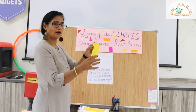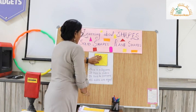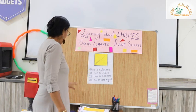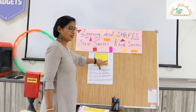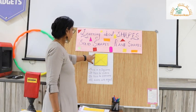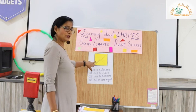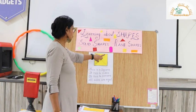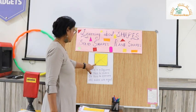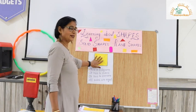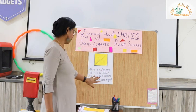Let us learn about plane shapes. Here is a square. The square has four sides — all four sides are equal. It has four corners, one, two, three, four. It also has two diagonals. A diagonal is a line drawn between two corners. Both diagonals of a square are equal.